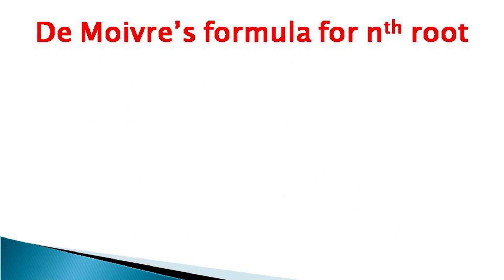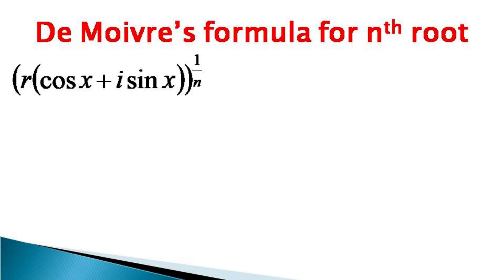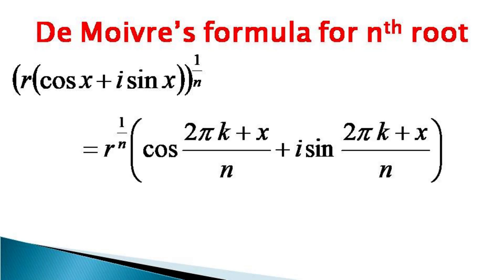This formula states that a complex number expressed in polar form and raised to the power 1/n — that is, r into [cos(x) + i sin(x)] whole raised to the power 1/n — becomes equal to r^(1/n) times cos[(2πk + x)/n] + i sin[(2πk + x)/n].